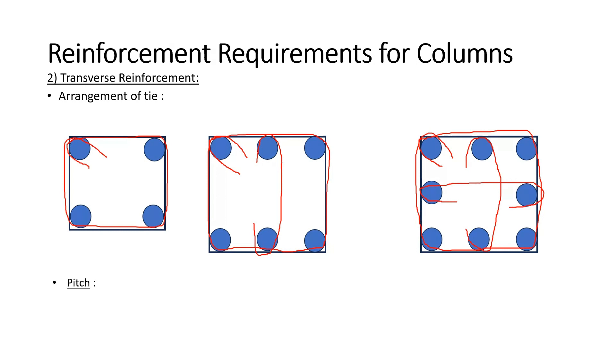Now coming to the pitch or the spacing of these lateral ties it should be minimum of least lateral dimension, 16 times dia of smallest longitudinal bar and 300 mm.